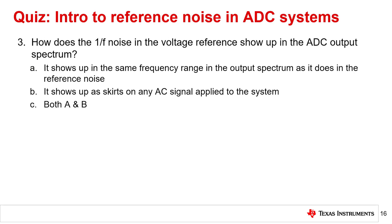Question 3: How does the 1 over F noise in the voltage reference show up in the ADC output spectrum? The correct answer is C, both A and B.